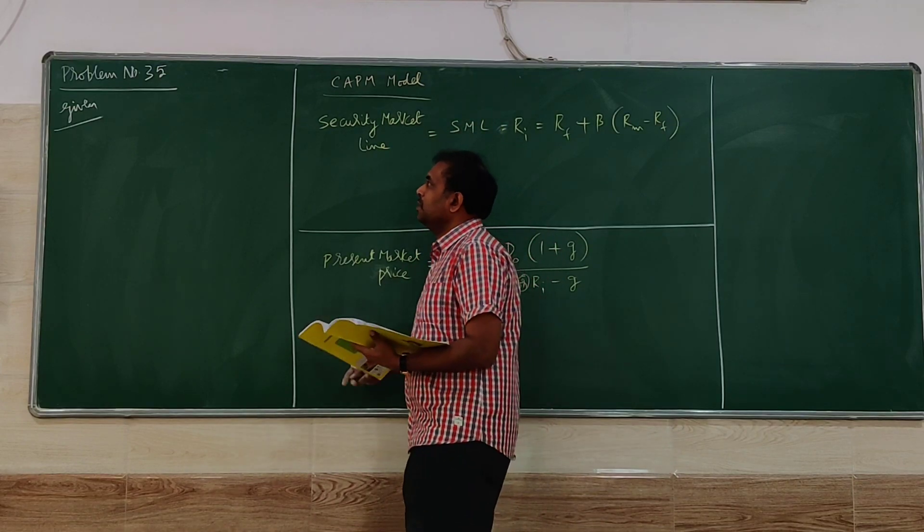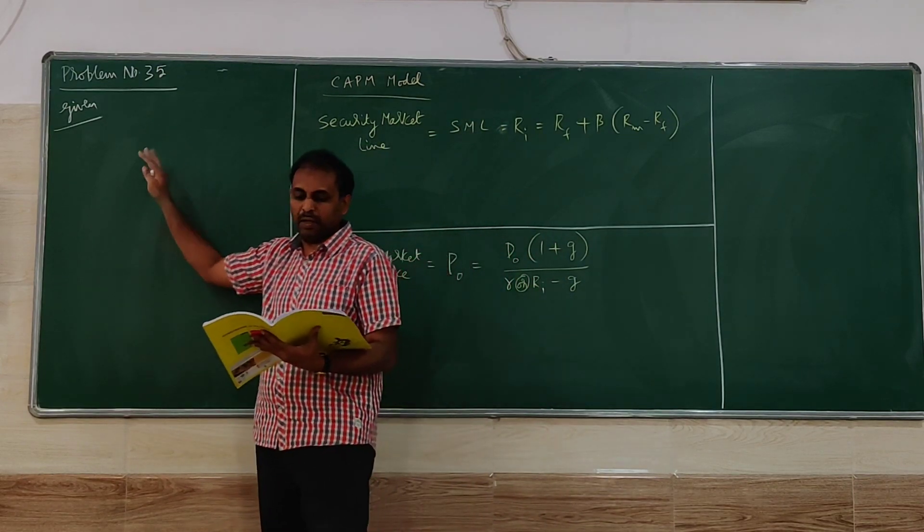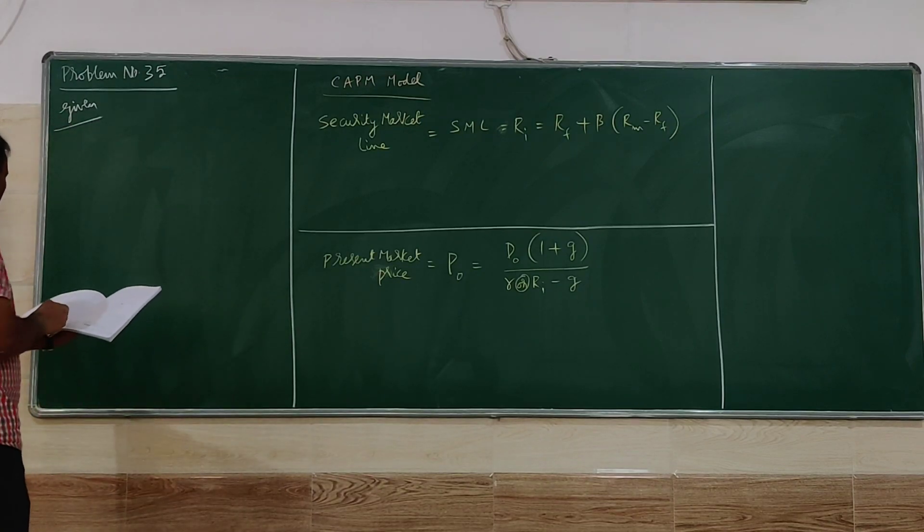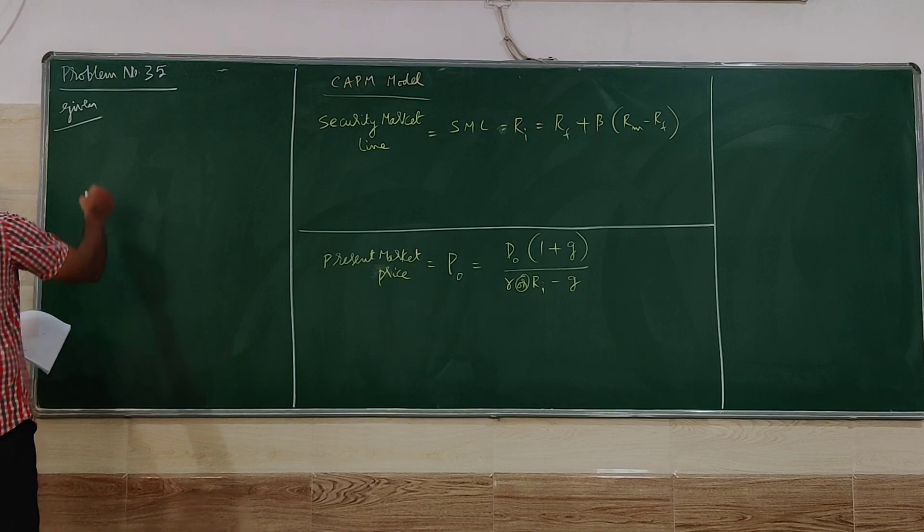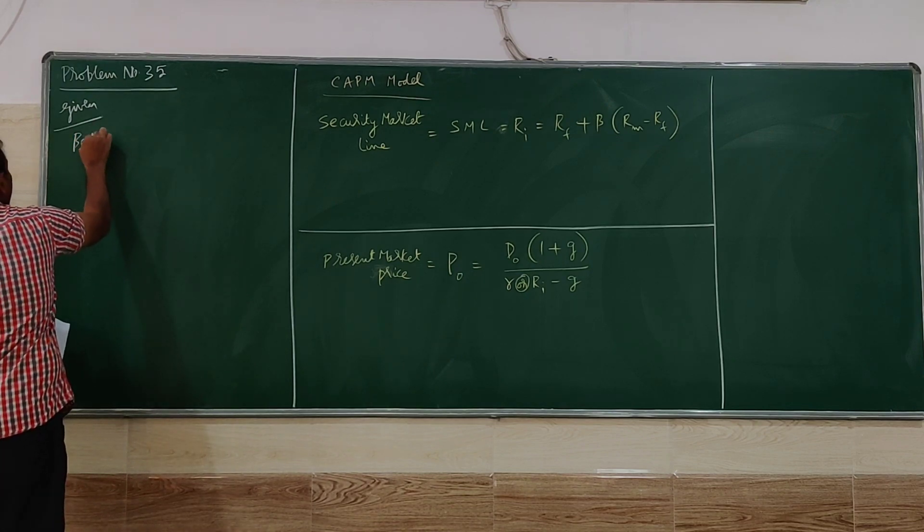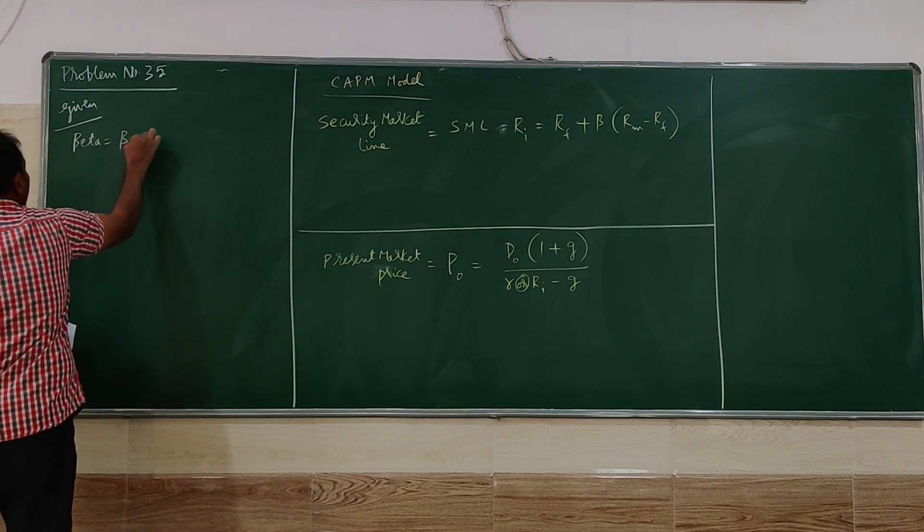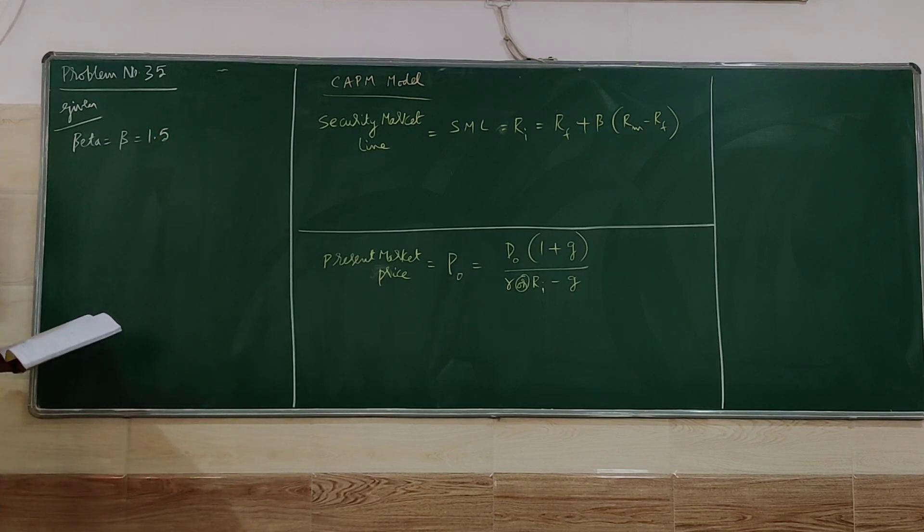So let's first check out what information is given in the problem. First part you can see, B Enterprises has a beta of 1.5.